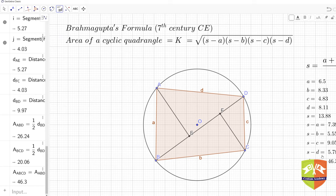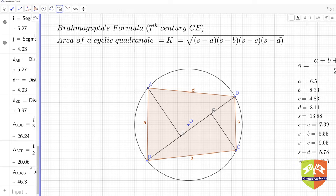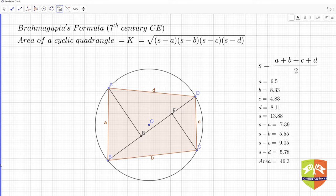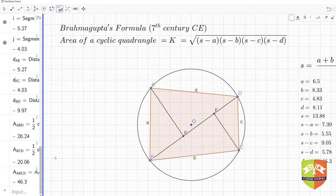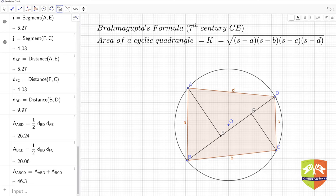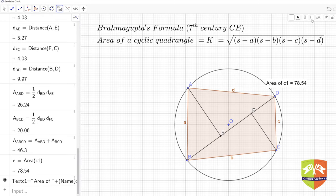You can see 46.3 was calculated using Brahmagupta's formula: square root of (s minus a)(s minus b)(s minus c)(s minus d). Here, the area summing the two parts of the quadrilateral is also 46.3. So this formula does work. I can change the values - if I change the location of any point, the areas continue to match.